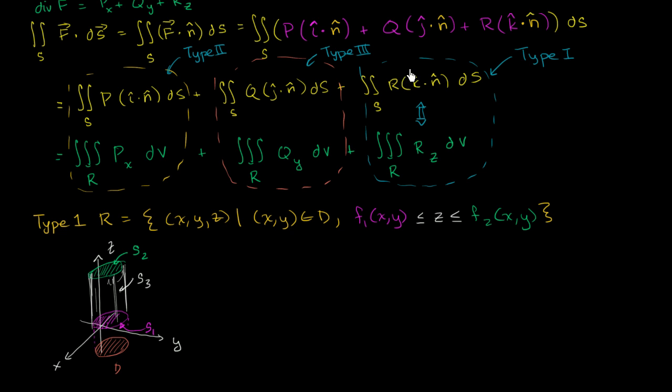So remember, we're just focusing on this part right over here. So the surface integral, the surface integral of r times k dot n, the dot product of k and n, ds can be rewritten as the, let me write it this way, can be rewritten as the surface integral over S2 of r times k dot n ds, plus the surface integral